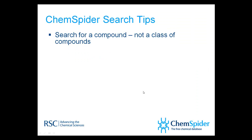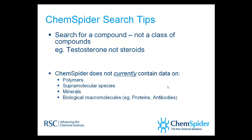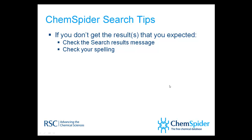Remember that you should use identifiers relating to a specific compound or mixture, and not a general class of compound or a type of reaction. If you do not get the result that you expected, read the search notification message. If your query did return some results, look at the synonyms that are listed in those records for clues as to why those records were picked out. And of course, check your spelling.